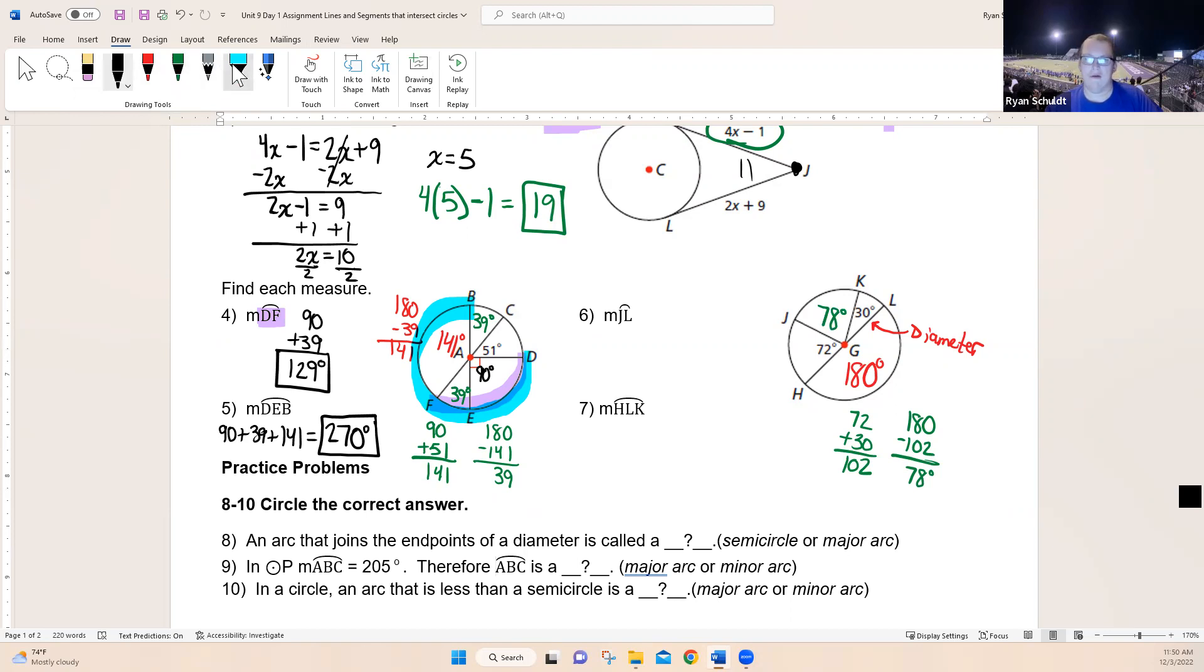Let's see what they ask us for. They ask us for JL. That's two letters, so I need to go the short way around. J to L—boom, short way. 78 plus 30 is 108. 108 degrees.